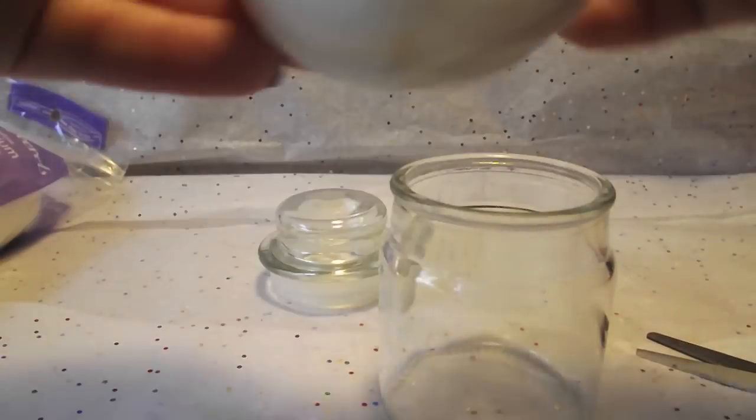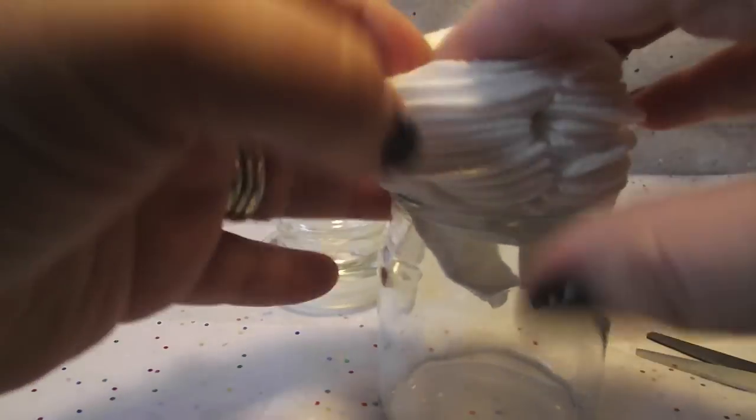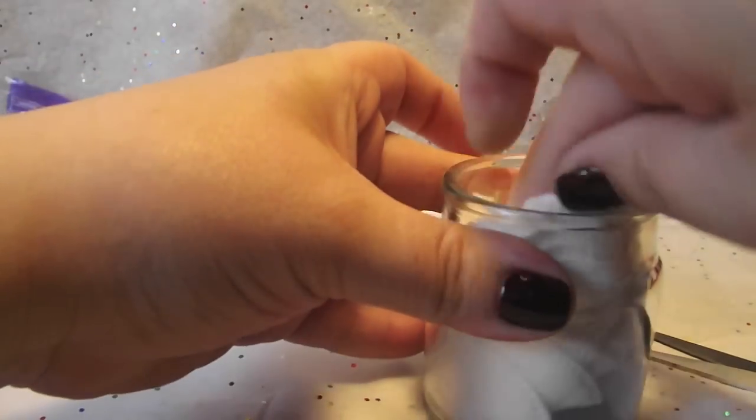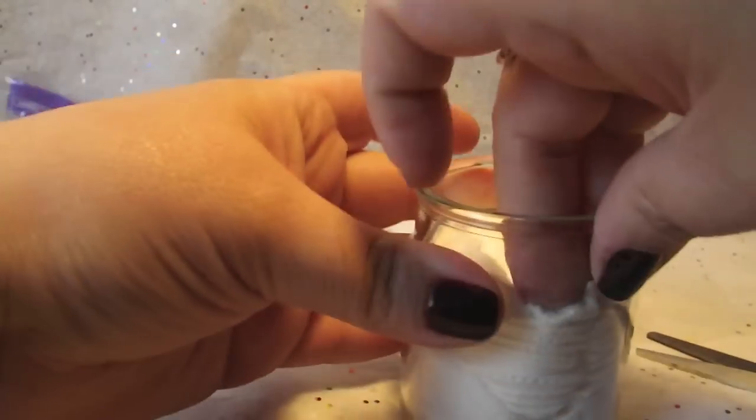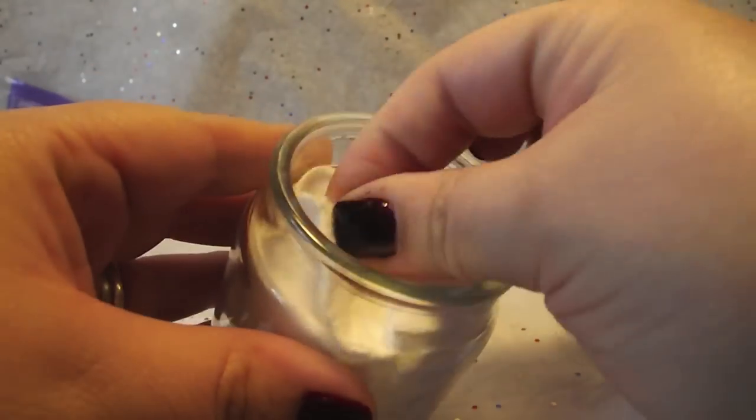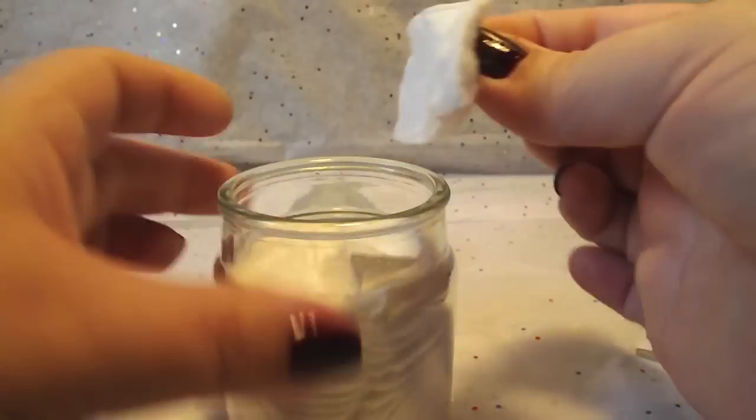So you're just going to take those and you're just going to smash them into your jar trying to keep them as flat as you can. So you're going to go ahead and put those in. So once you have the acetone in all you're going to do is pull one out and then remove your fingernail polish.